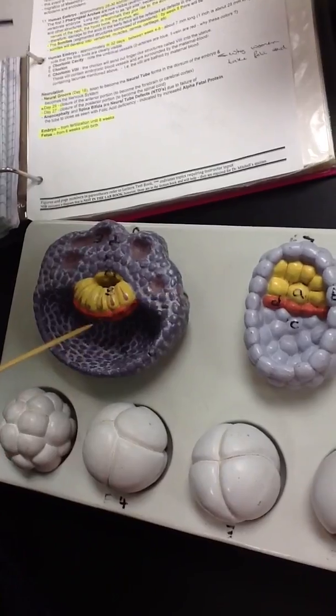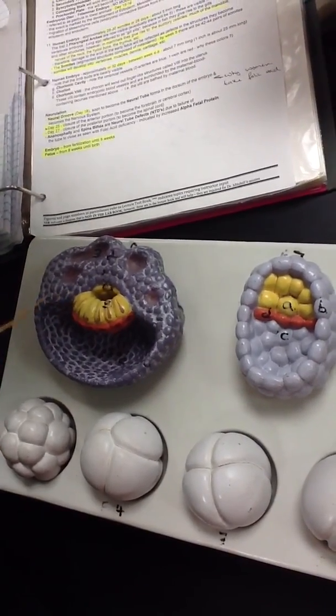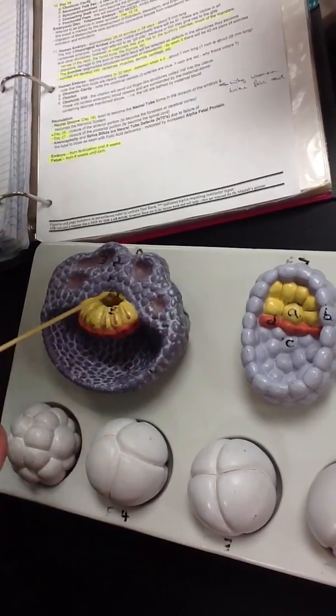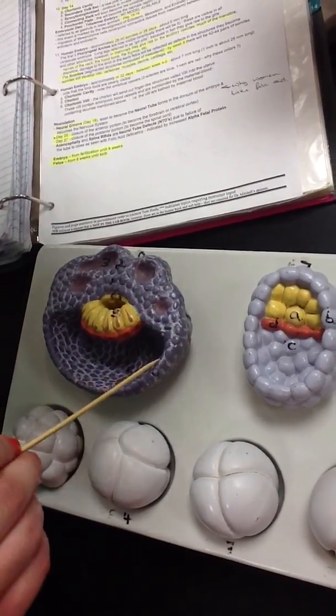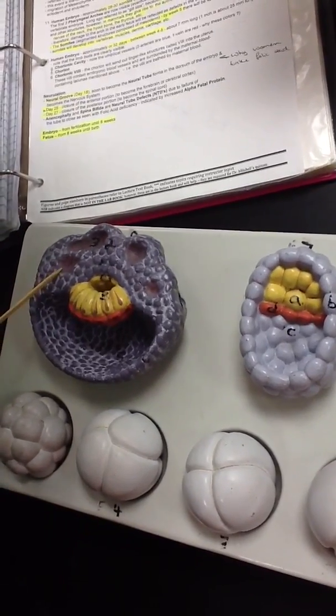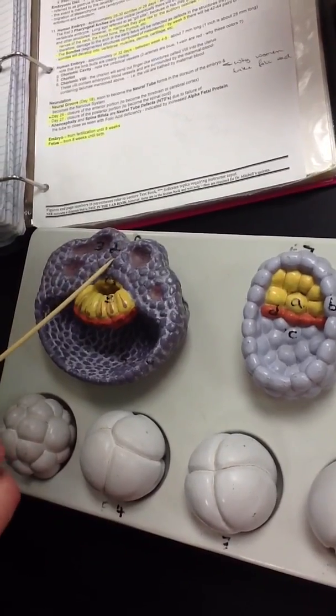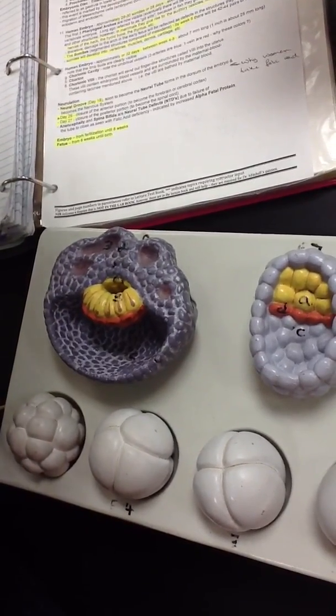This is around day 8. The trophoblasts differentiate into three things. The cytotrophoblasts, which is this single layer that surrounds the embryo, and that gives rise to the syncytiotrophoblasts, which are right here. Syncytio refers to the fact that they're multinucleated, and the syncytiotrophoblasts are aggressively invasive cells that digest into the uterus to establish the placenta.